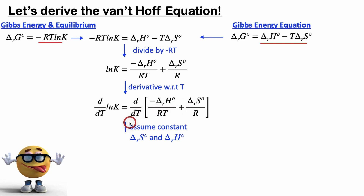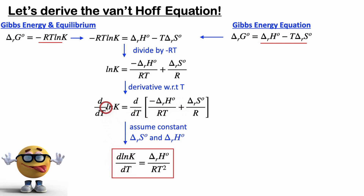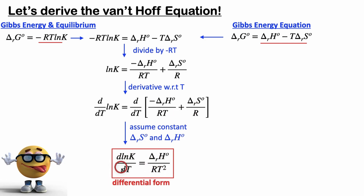So with that, this is what our derivative becomes. The left-hand side stays the same; the right-hand side is the derivative of negative one over T, which is positive one over T squared. The ΔS/R term is a constant, and the derivative of a constant is zero. So this is the Van't Hoff equation in differential form — but unfortunately it's not the most useful form, for exams anyway.